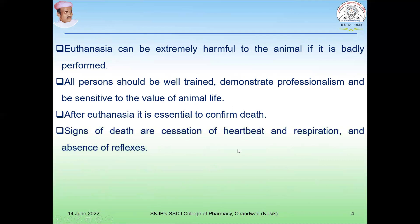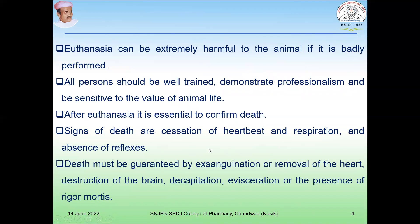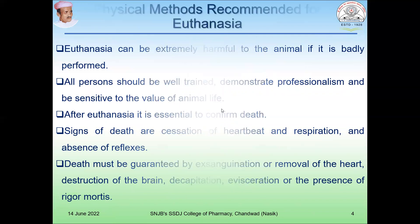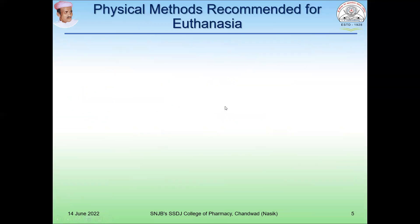After euthanasia, it is essential to confirm that the animal has died. Death can be confirmed by cessation of heartbeat and respiration and absence of reflexes. Death must be guaranteed by segregation or removal of the heart, destruction of the brain, decapitation, evisceration, or the presence of rigor mortis.